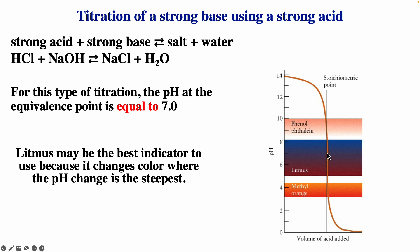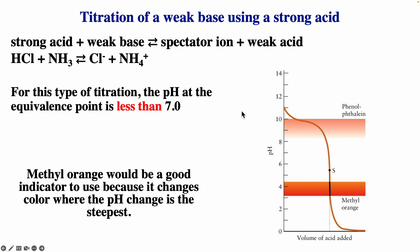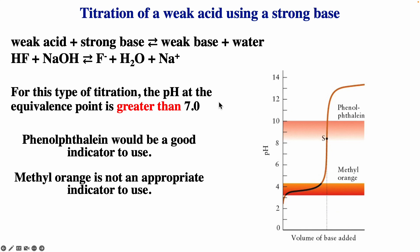For a strong acid/strong base titration, the endpoint is around pH 7, and litmus is probably the best indicator choice because it changes color close to that endpoint. For a weak base titrated with a strong acid, the endpoint is at lower pH, so methyl orange might be a better choice. For a weak acid titrated with a strong base, the pH at equivalence is greater than 7, and phenolphthalein would be a good indicator choice.